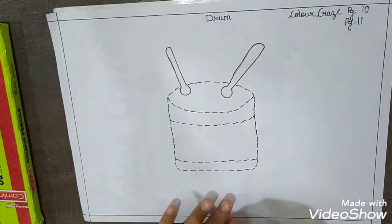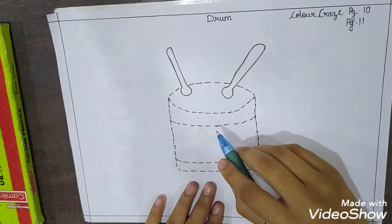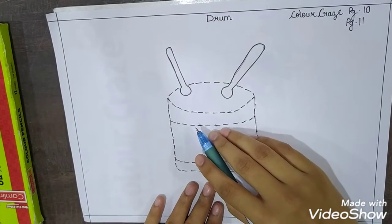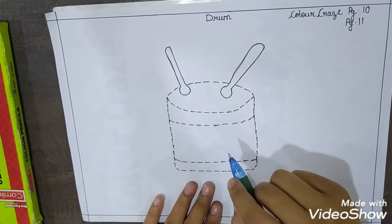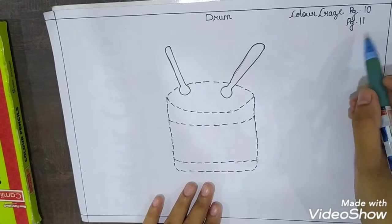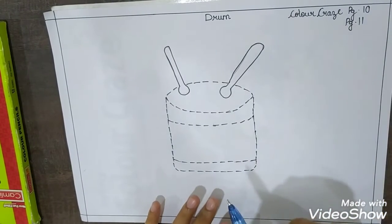So in your skill sheets it is on page number 10 and in your coloring and drawing book of color craze it is on page number 11. Okay.